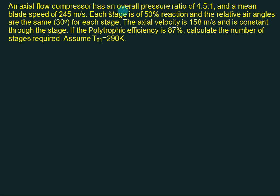An axial flow compressor has an overall pressure ratio of 4.5 to 1 and a mean blade speed of 245. U is given, overall Rp is given.